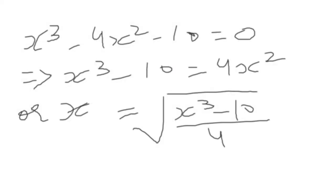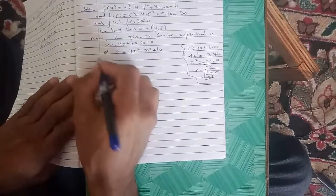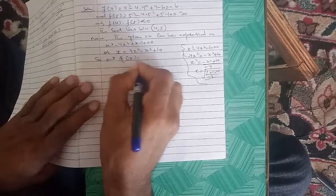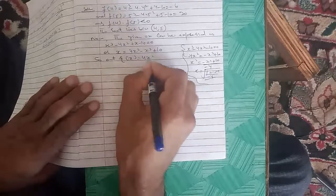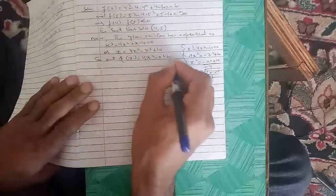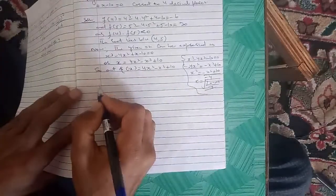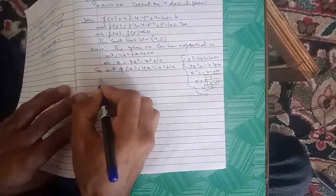If there was no term involving single power of x, then we do the same as in the secant method. So our φ(x) equals 4x² - x³ + 10. Now using the iteration formula...